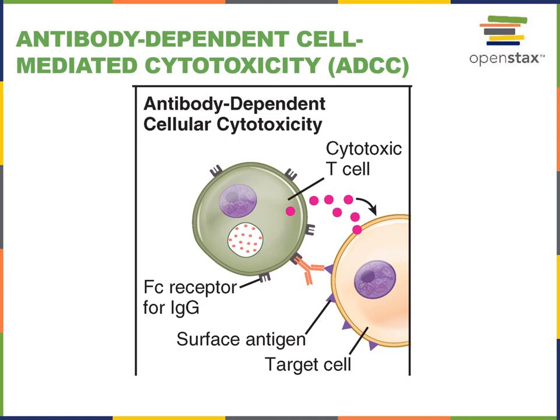An antibody on the surface is labeling either a pathogenic cell or a cell infected with an intracellular pathogen. Those antibodies are helping to stimulate activation of a cytotoxic T cell that can then release cytotoxic granules containing perforins and granzymes that activate the apoptotic cell death mechanism in the target cell, whether it's an extracellular pathogen or a cell of our own body that's infected with an intracellular pathogen.